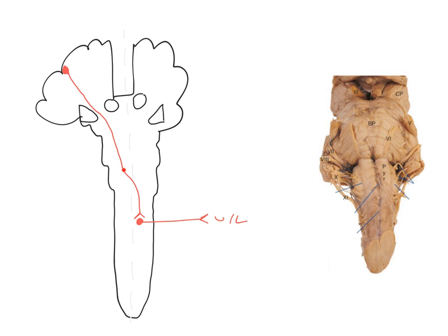Once the axons have passed through the pyramids they begin to decussate. In the caudal medulla they start to cross over the midline. We can see fibres crossing from the pyramid on the right-hand side over to the corticospinal tract on the left side of the cord. This region is called the decussation of the pyramids — an important region of the medulla where those corticospinal fibres cross over.